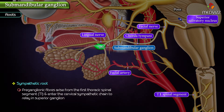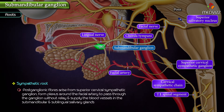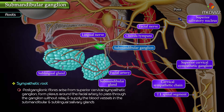Sympathetic root: it is derived from the sympathetic plexus around the facial artery. The pre-ganglionic fibers arise from the first thoracic spinal segment T1 and enter the cervical sympathetic chain to relay in the superior cervical ganglion. The post-ganglionic fibers arise from the superior cervical sympathetic ganglion, form a plexus around the facial artery, and pass through the ganglion without relay to supply the blood vessels in the submandibular and sublingual salivary glands.